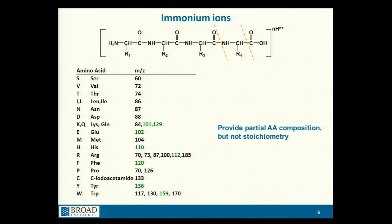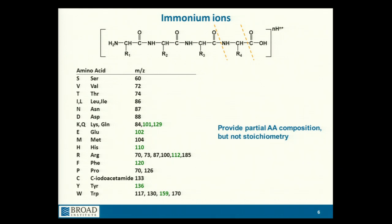The masses of the various immonium ions for the different amino acids are shown here. The ones in green are easily observable on the most common instrumentation we use; the ones in black require more specialized instrumentation. It's important to remember that these ions tell us about composition but not stoichiometry — for example, if you see a 110 ion, that means histidine is present in the peptide, but we don't know how many histidines.